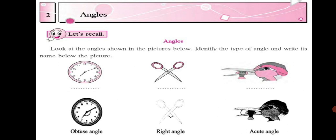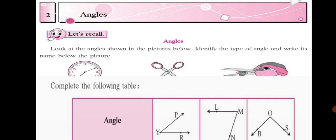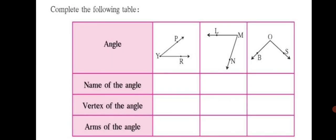Now let's complete one table. Here you see angles given. You have to write the name of the angle, vertex of the angle, and arms of the angle. This activity is in your textbook page number 6. So let's do it. Open your textbooks to page 6.